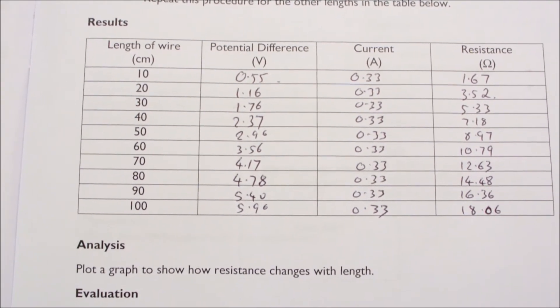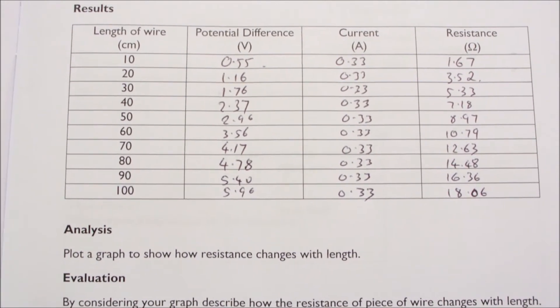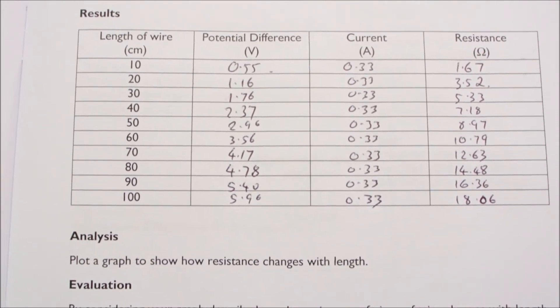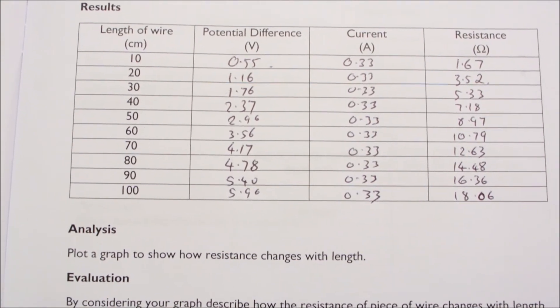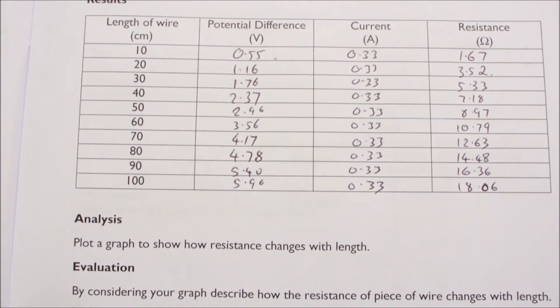The task then is to plot a graph which shows how the resistance changes with the length, with the resistance as the dependent variable at the side and with the length as the independent variable along the bottom.